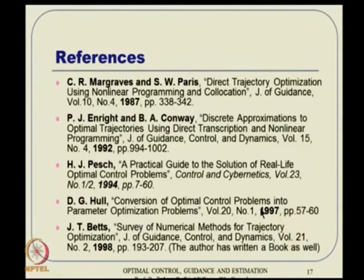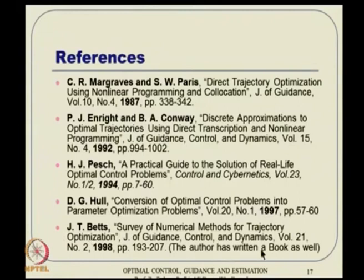Many references are available on direct transcription. A seminal paper appeared in 1987, and a more detailed explanation with different problems appeared in 1992. There are also survey papers with more elaborate explanations. The last reference is particularly notable — the author has written a book and developed commercial software for solving optimal control problems using direct transcription. You can concentrate on about 15–20 pages from those references for much more insight.